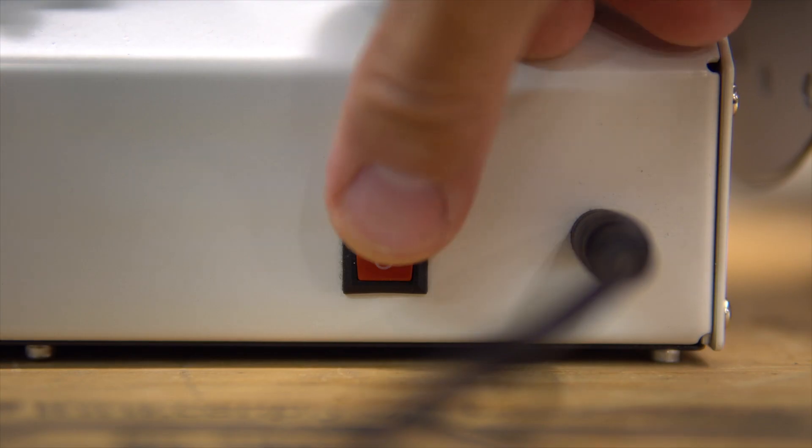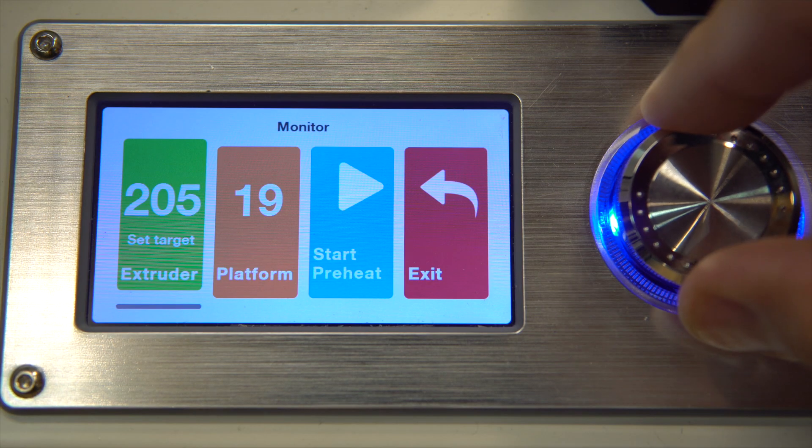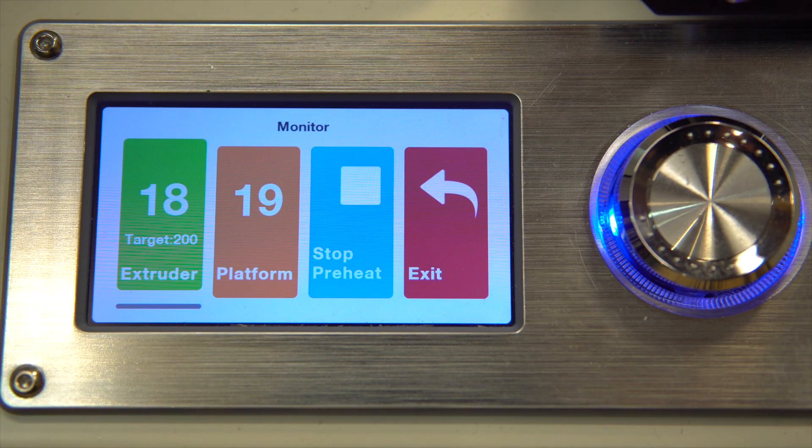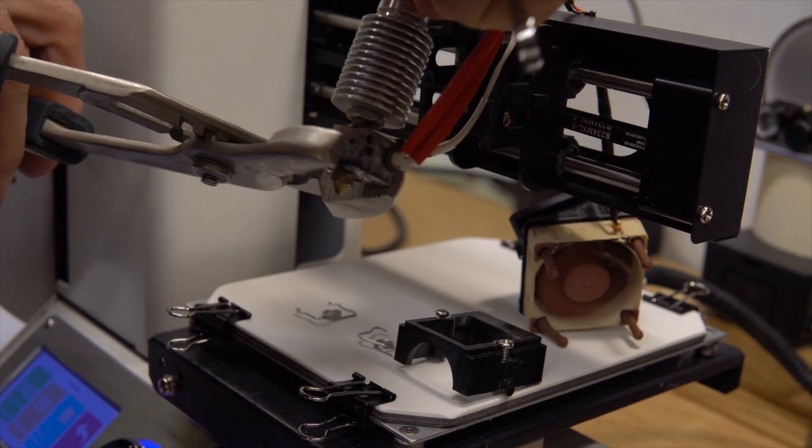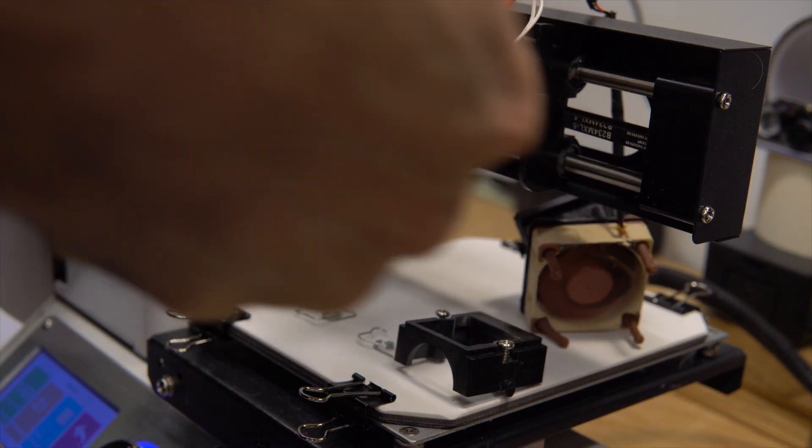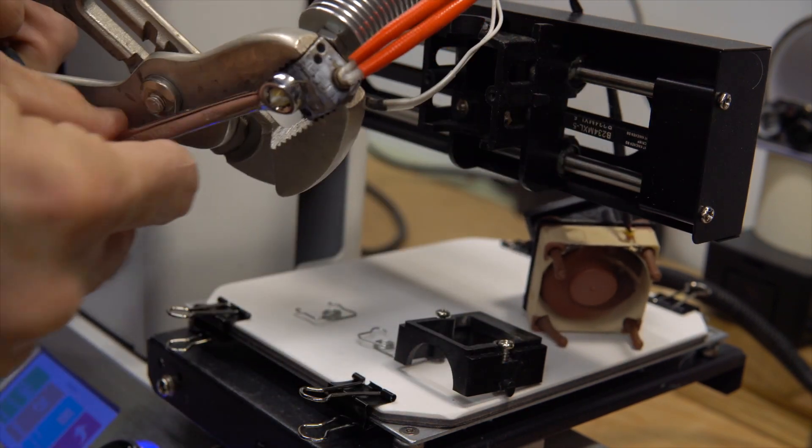Turn on the printer and preheat again at 200. Then you will be able, when it nears 200, you will be able to turn the nozzle a couple of turns.